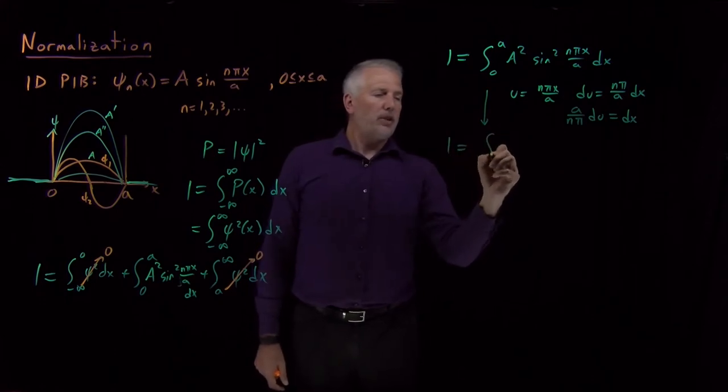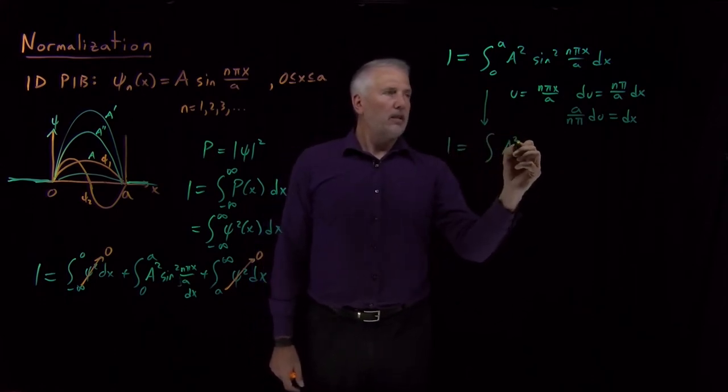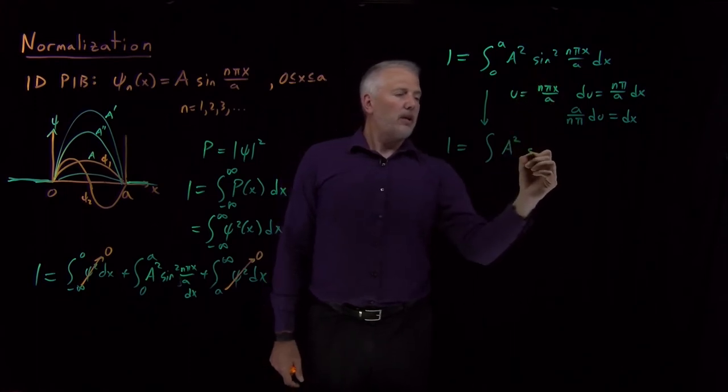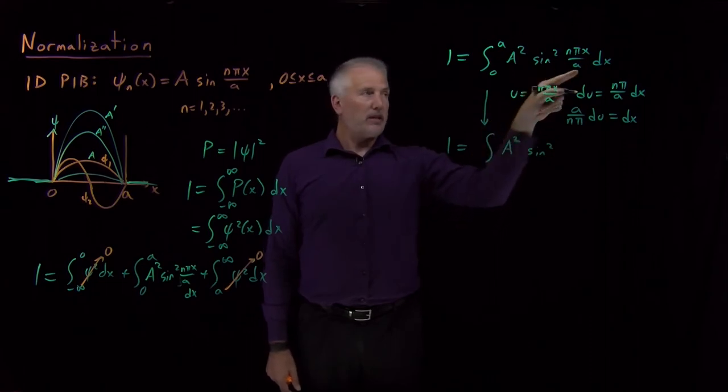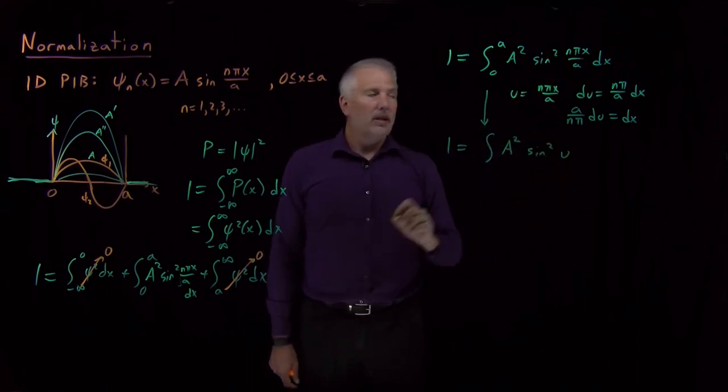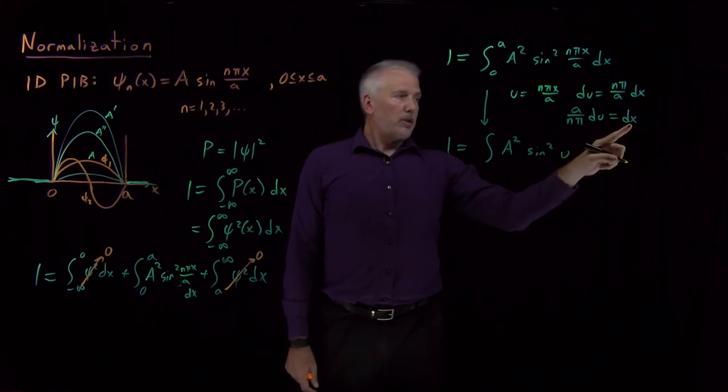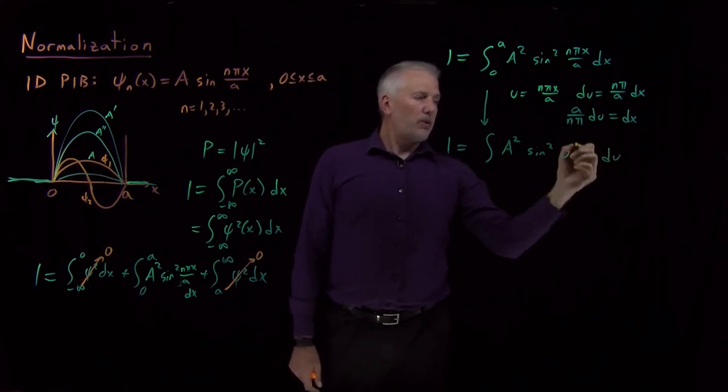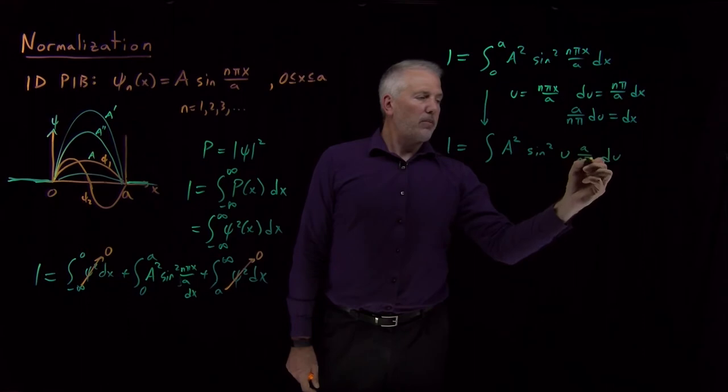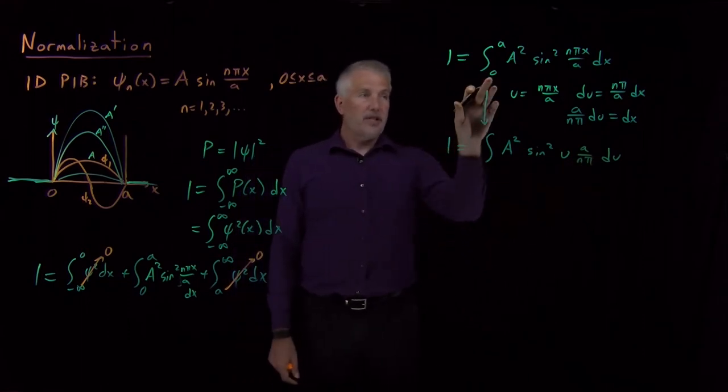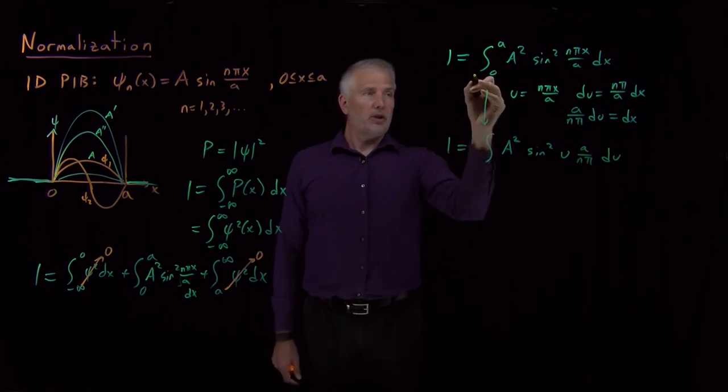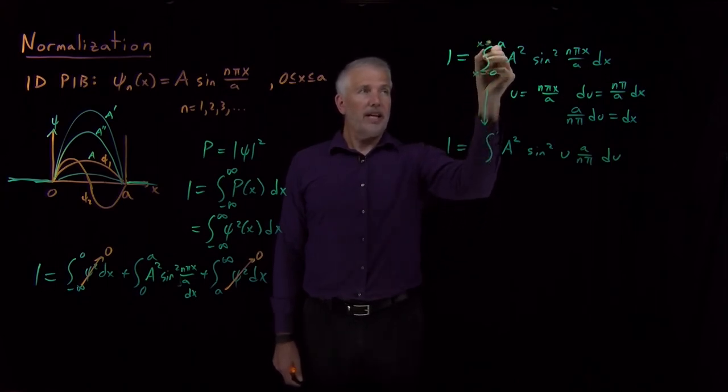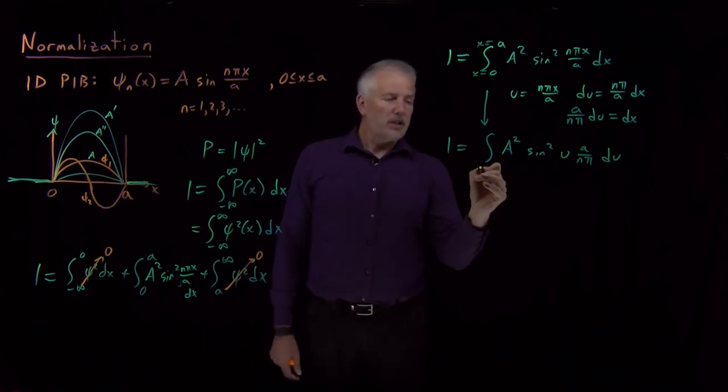So I want one to be equal to the integral of A squared sine squared nπx over a. I chose my u so that nπx over a would simplify and just become a u. dx has now become a little more complicated. dx is du multiplied by some constants a over nπ. And because I have a definite integral, I have to remember and transform the limits as well. So the integral used to go from x equals zero to x equals a. Now my integral needs to go from u equals something to u equals something.